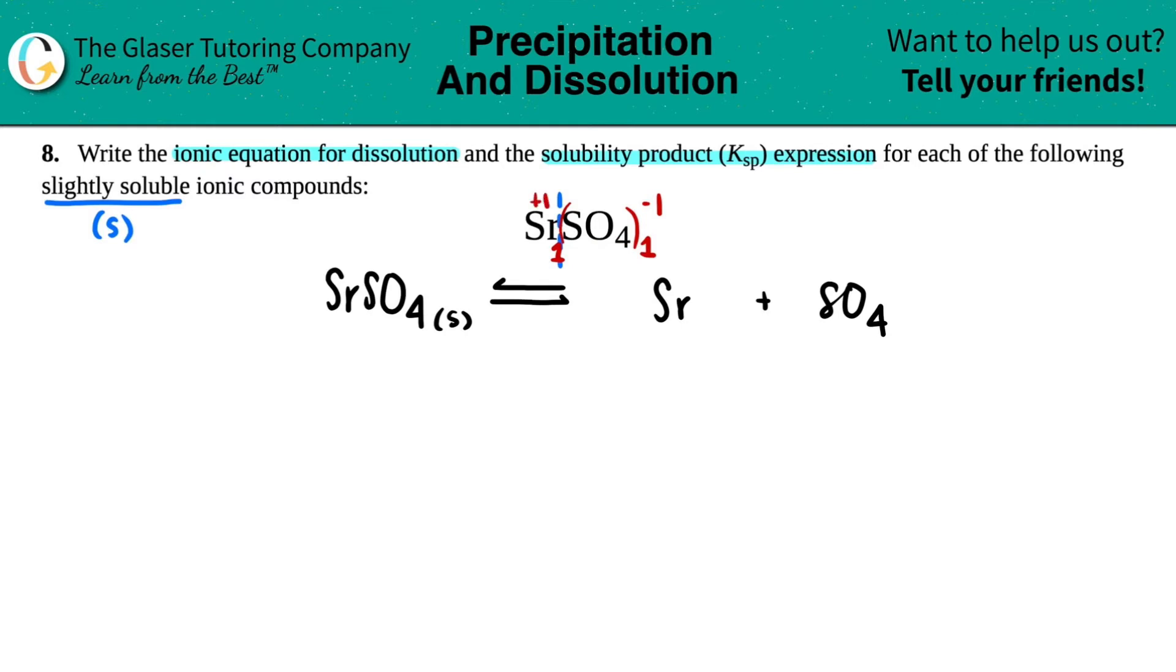However, sulfate being a negative one, that never happens. And Sr being a plus one, Sr is in group two. This is a compound that was simplified. Keep in mind that any time that you see sulfate, SO4, it's always a negative two charge. No exceptions. So highlight that, box that off.